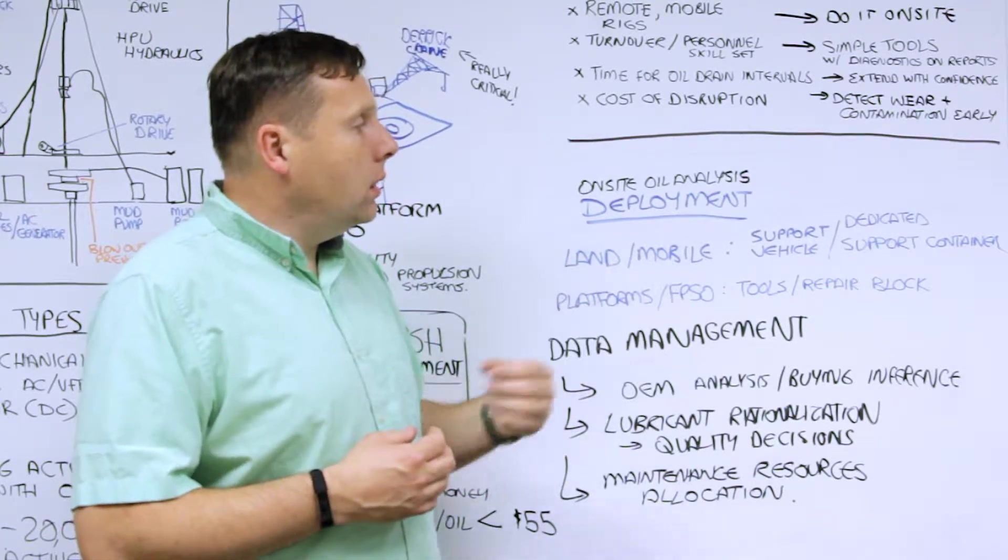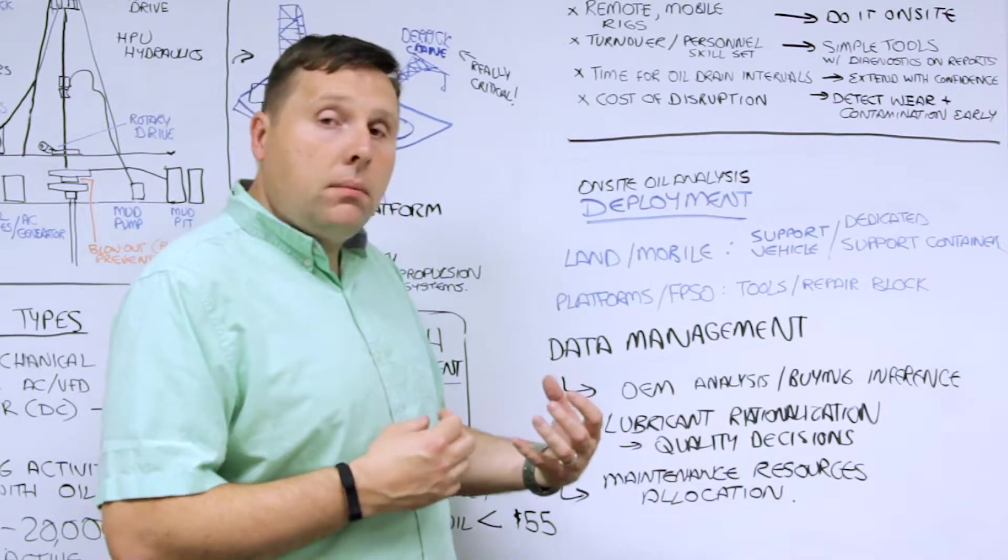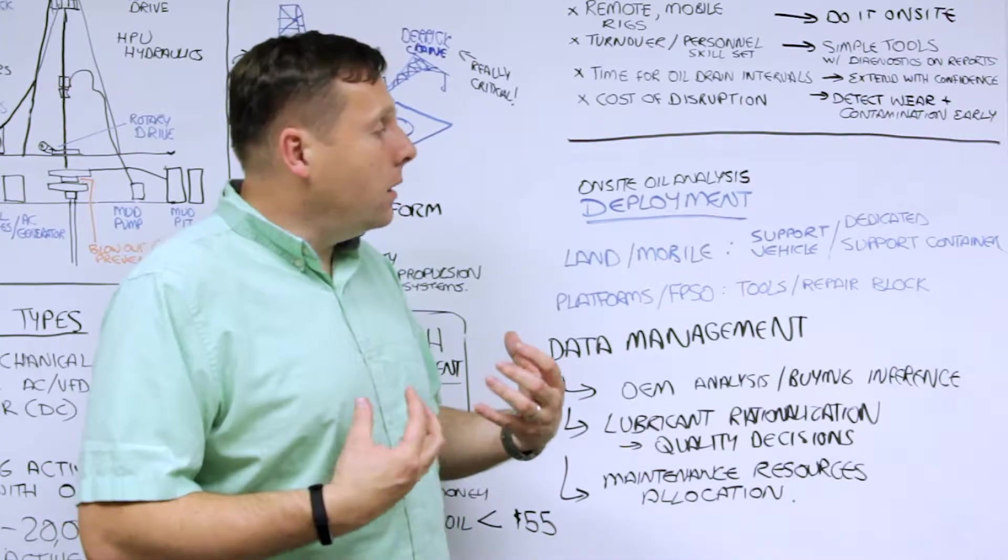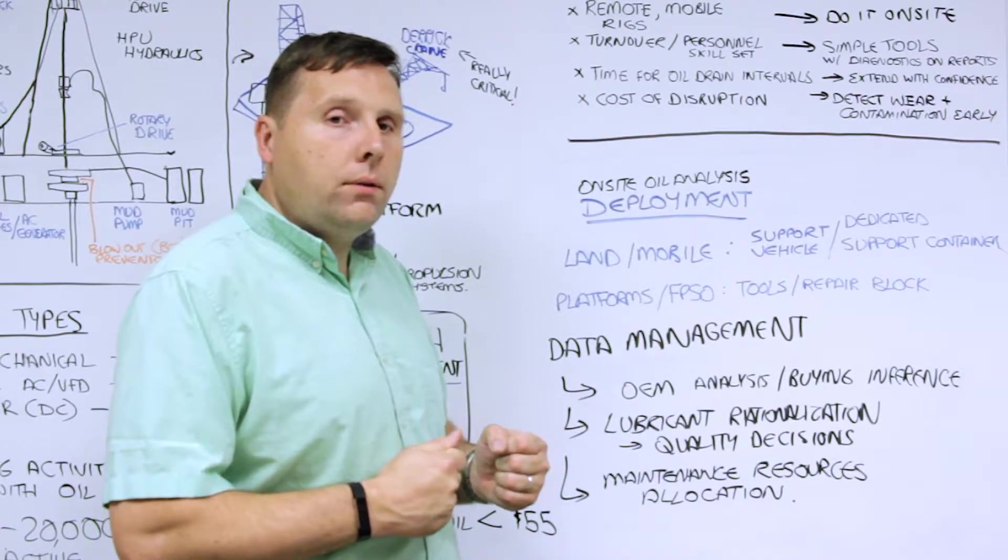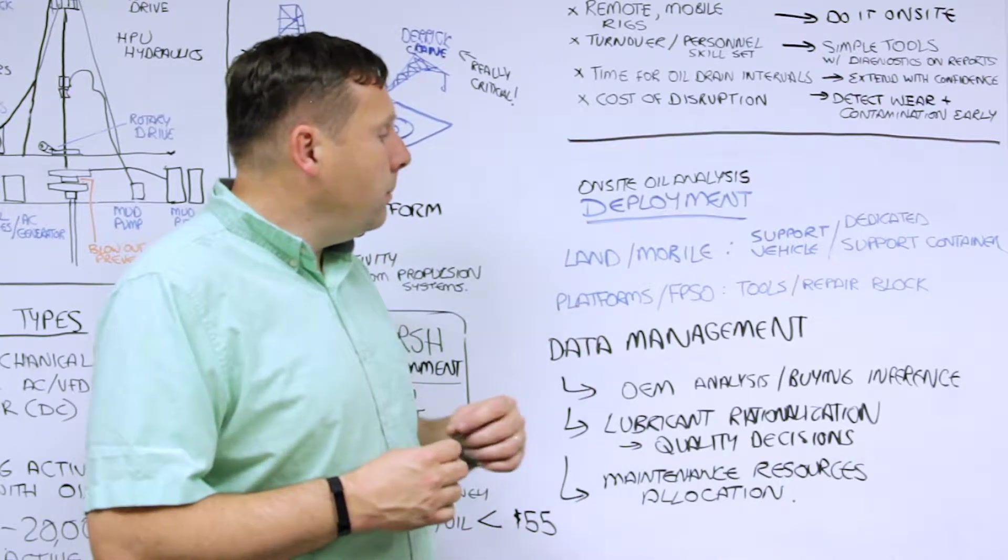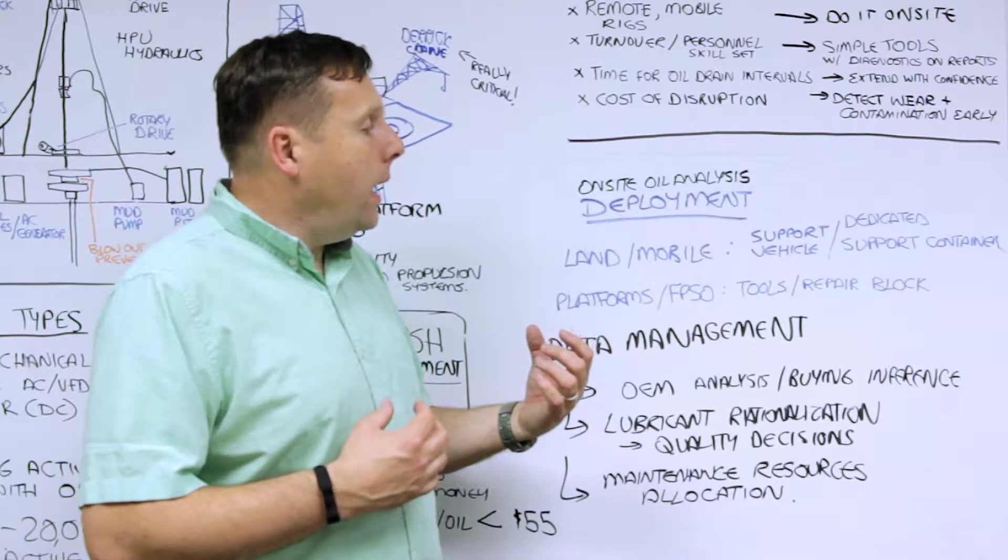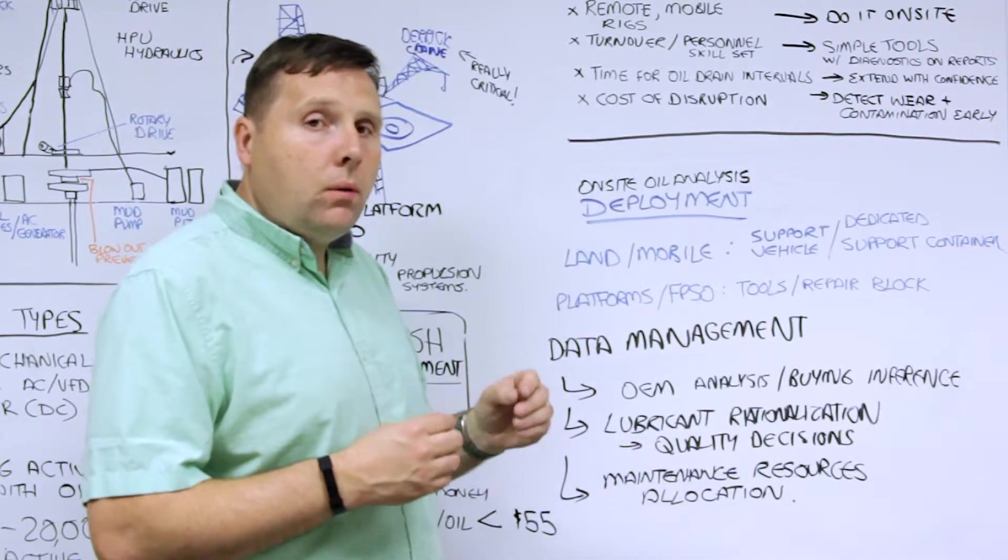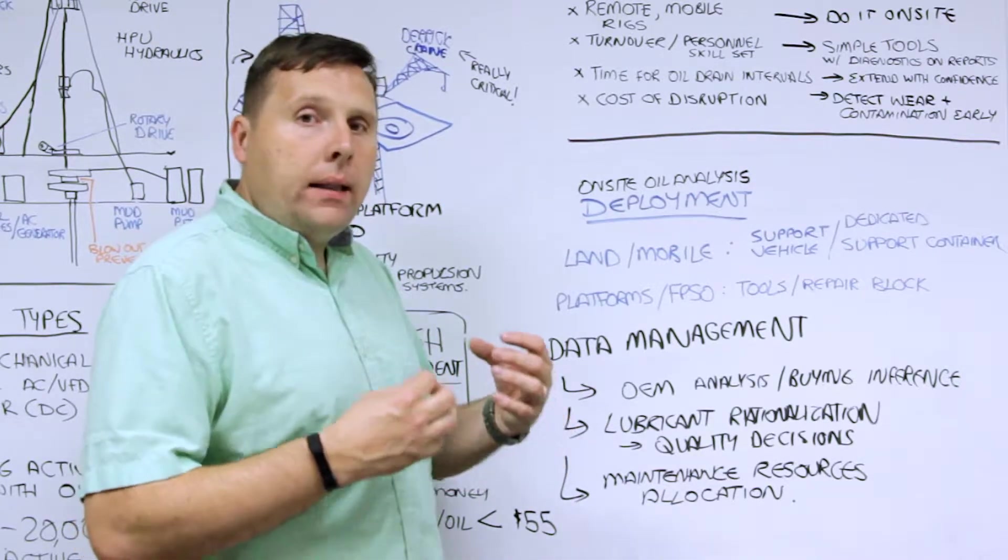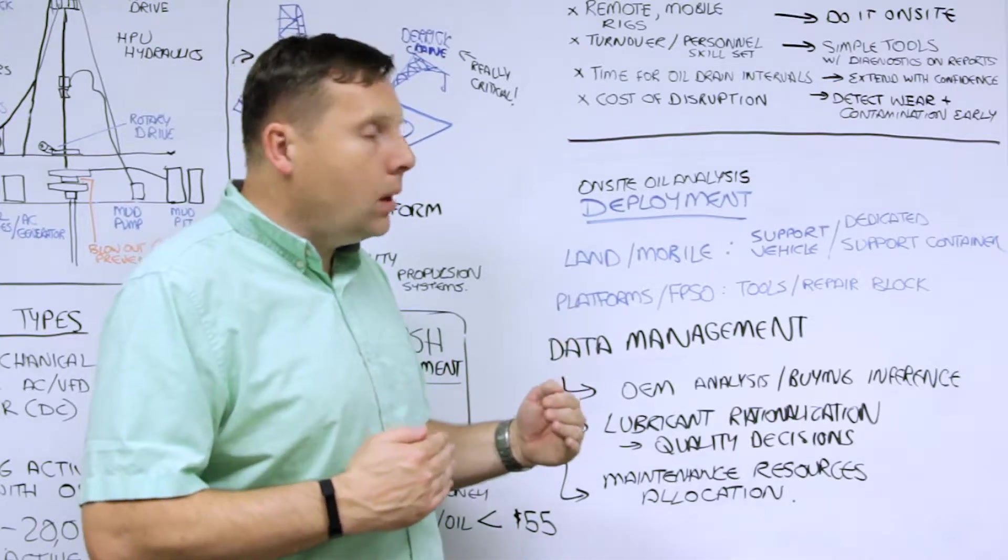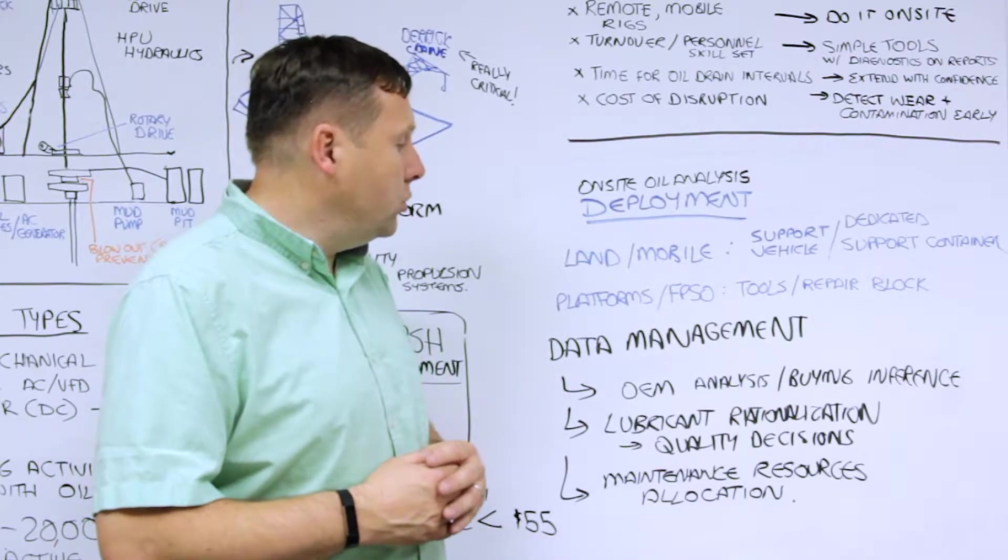On-site oil analysis equipment, when deployed on these sites, if it's in a land or mobile application, is generally done by way of a support vehicle or dedicated container. In some situations, if you have a variety of rigs in a general geographical area, they may have a centralized repair center and the equipment will reside there. If it's in a platform or offshore application, it's on top of the platform or in the repair area. We don't do oil analysis at the equipment because API requirements are intrinsically safe. The equipment is generally in the repair block or tool area, separated from the actual equipment location.